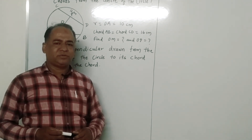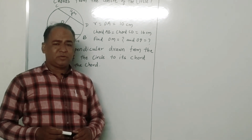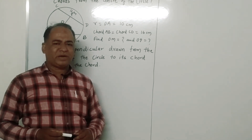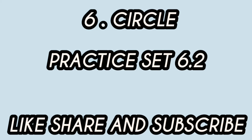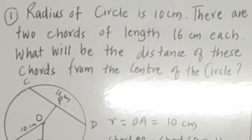Dear students, in this video we will solve examples of practice set 6.2 from the chapter Circle, which are based on properties of chords of the circle. The first example: the radius of the circle is 10 centimeters. There are two chords of length 16 centimeters each. What will be the distance of these chords from the center of the circle?